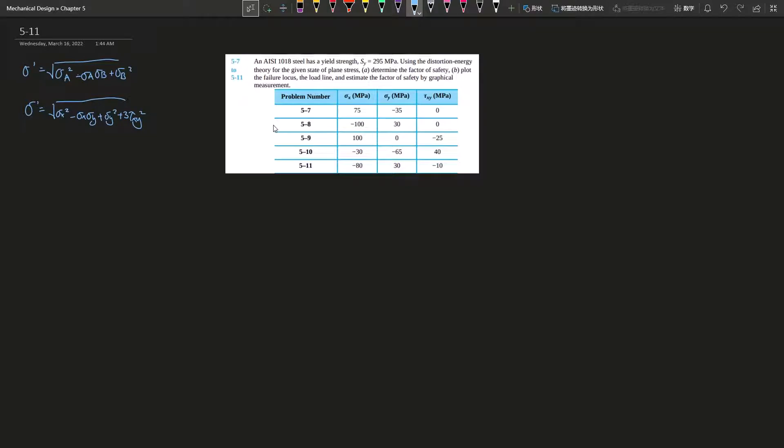Alright, so for question 5-11, we're using the same material with yield strength of 295 megapascals. We're trying to use the von Mises criterion. First of all, we want to determine the factor of safety, which for von Mises is just the yield divided by von Mises stress, and then plot the failure locus line and estimate the factor of safety by graphical measures.